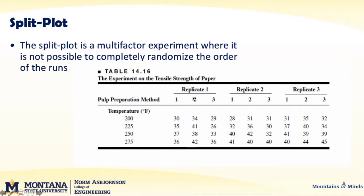Then they're going to do pulp preparation method two — another hard-to-change factor. So they're going to go through whatever that requires, maybe an hour's or a day's worth of work. From there, they can once again randomize the easy-to-change factors, like temperature. They'll do the same for method three. That entire process is their first replicate, and then they'll do the same for replicate two and replicate three.